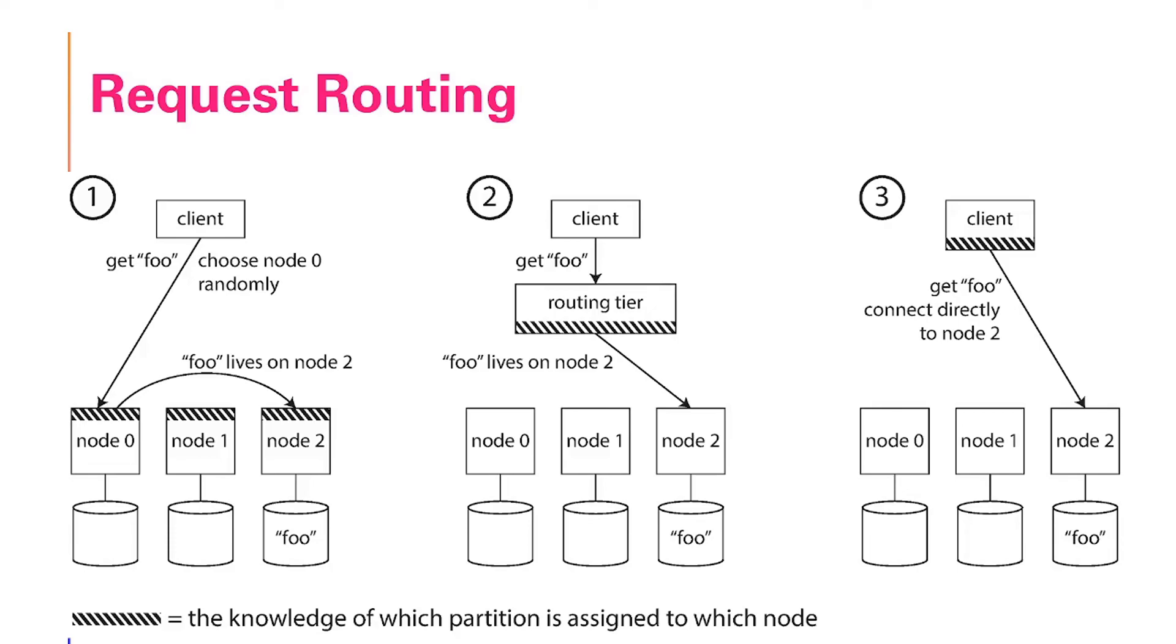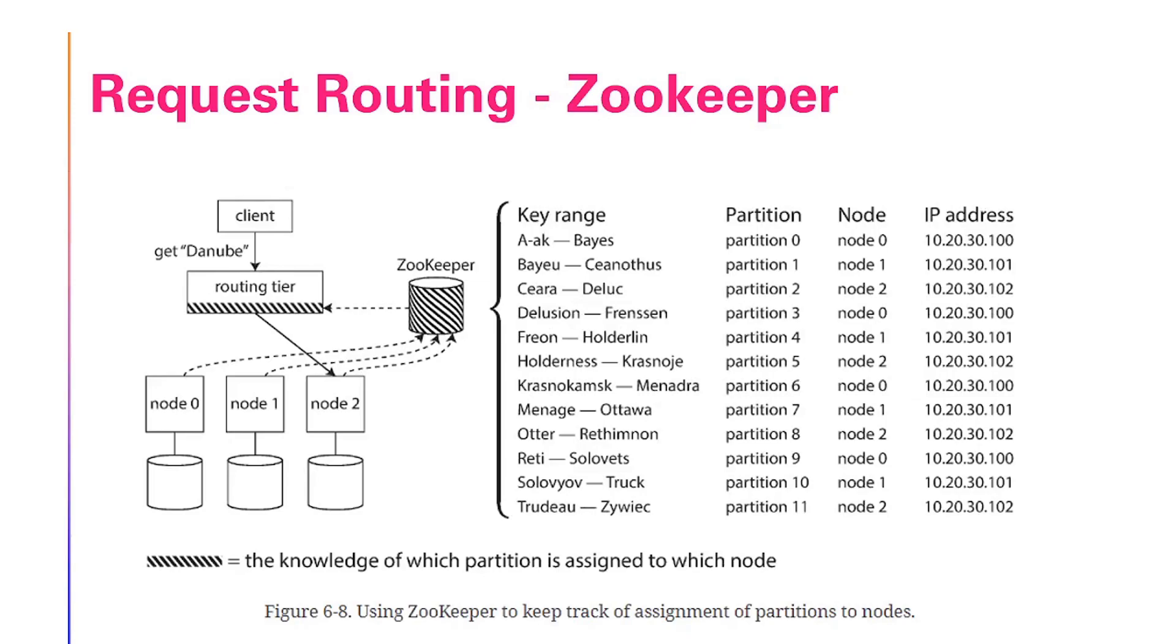In the second option, it is the routing tier which has the knowledge of which partition is assigned to which node and it is doing it. And in the third case, the client has the knowledge of which partition is assigned to which node. For a practical example, we see that ZooKeeper is being used to track the assignment of partitions to each node.